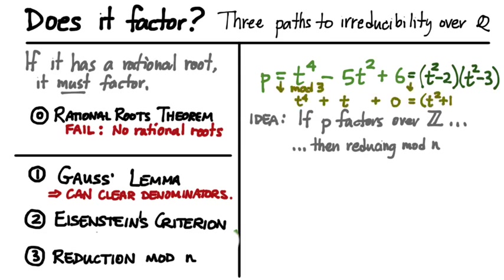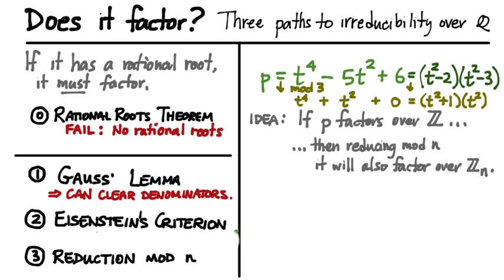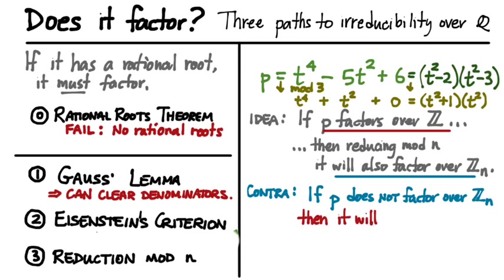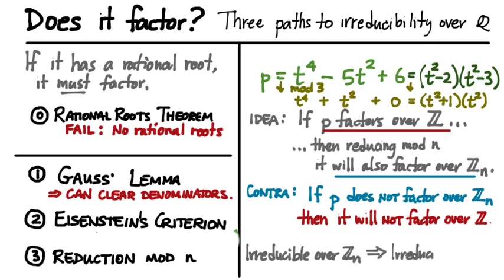What would happen if I took this polynomial and reduced all of its coefficients modulo a certain integer n? If we reduce mod 3, negative 5 becomes positive 1, 6 becomes 0, t squared minus 2 becomes t squared plus 1, and t squared minus 3 becomes t squared by itself. The key observation is that because p factored over the integers, when we reduce everything mod 3 it still factors over the integers mod 3. So if a polynomial factors over Z, then it must also factor over Z mod n. The contrapositive: if a polynomial does not factor over Z mod n, then it does not factor over the integers — and therefore, by Gauss's Lemma, not over the rationals either.